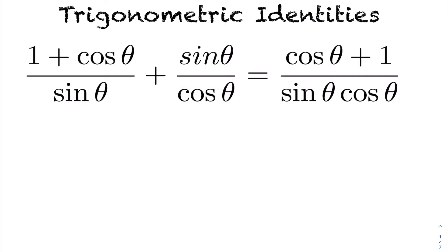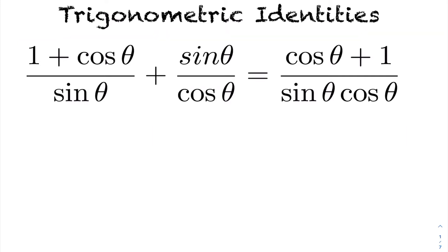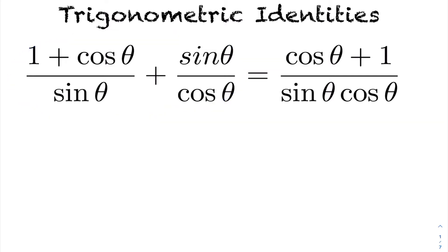In today's lesson we're going to be looking at trigonometric identities. When solving trig identities, you have to prove that a particular statement is true. What you need to do is pick one side of the equation — either the right hand side or the left hand side — and just work with that side, manipulating that expression to achieve the other side.